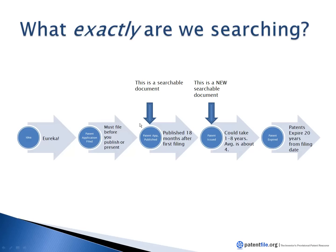Once you file your patent application, 18 months later that application is going to publish, which is called a published patent application. Then you continue through the patent process where you're usually arguing back and forth with a patent examiner on why you deserve to get a patent. Once you get through that process, you should get an issued patent, and then that issued patent will publish. Your patent will expire 20 years from the date you originally filed your patent application.